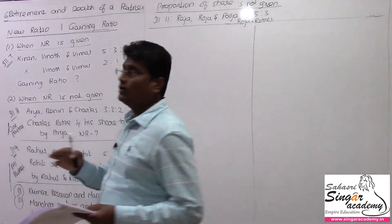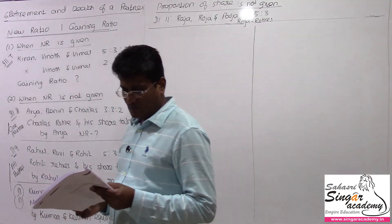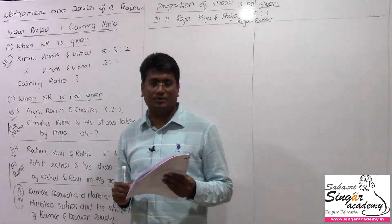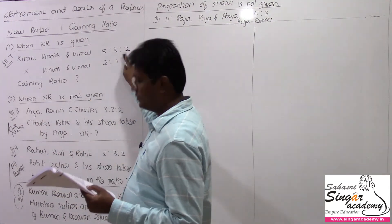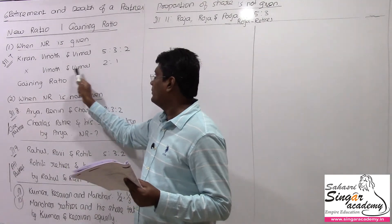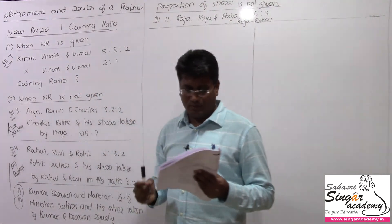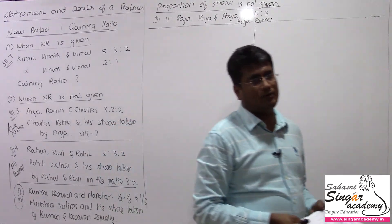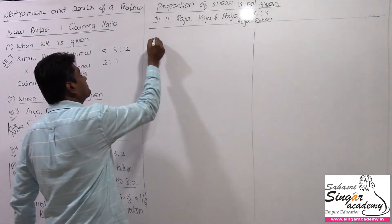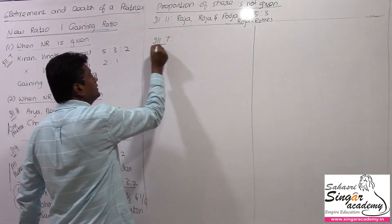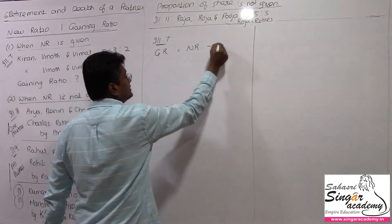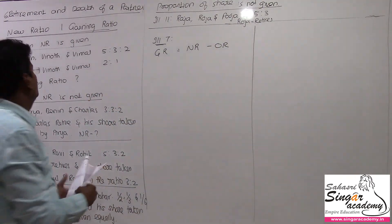First question — Illustration 7 — when new ratio is given. Kiran, Vinoth and Vimal are partners sharing profits and losses in ratio of 5 is to 3 is to 2. Kiran retires and the new profit sharing ratio between Vinoth and Vimal is 2 is to 1. Calculate the gaining ratio. The formula is: gaining ratio is equal to new ratio minus old ratio.